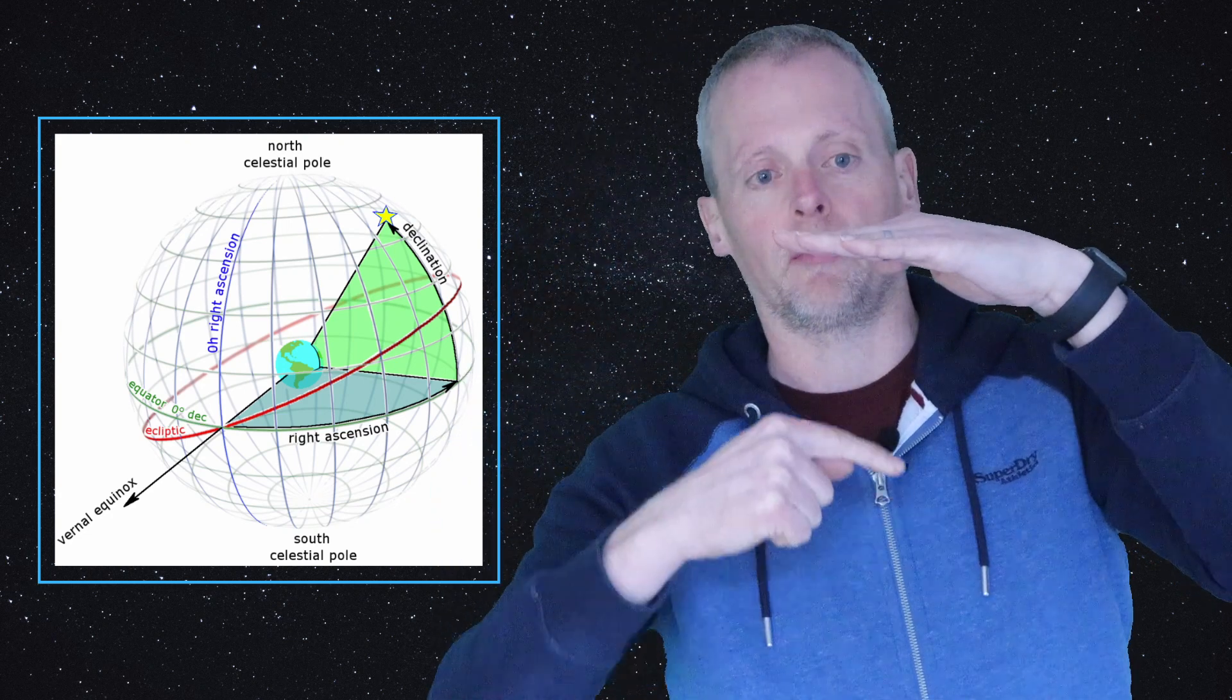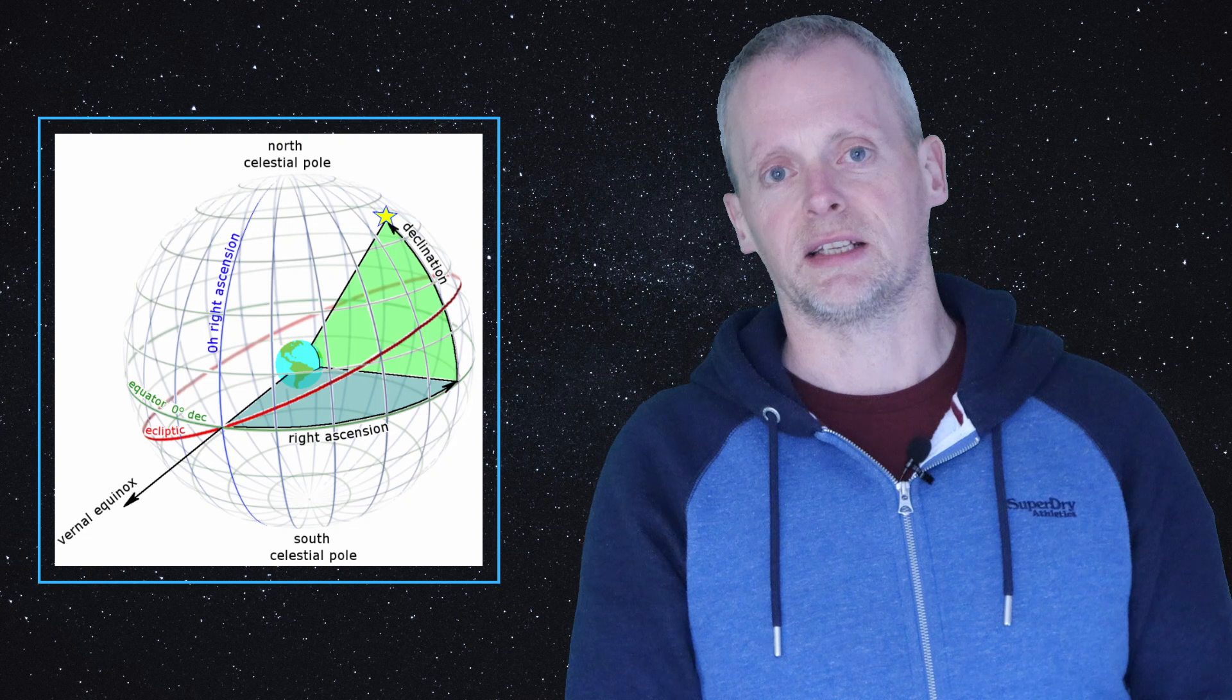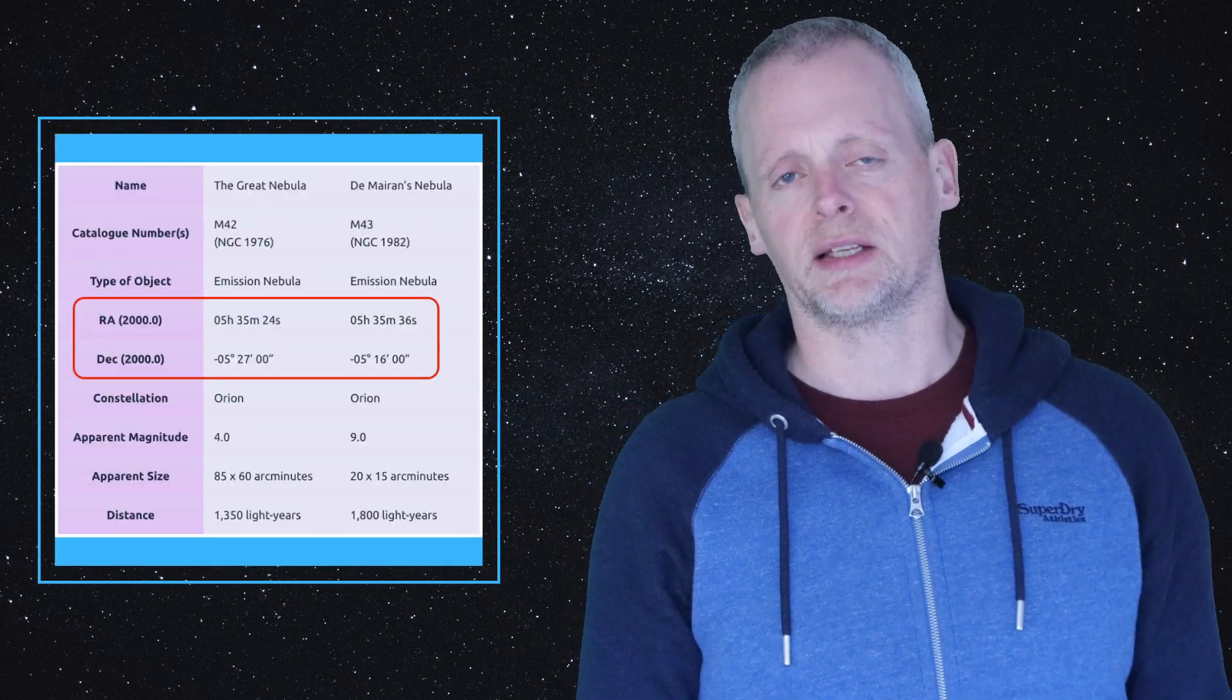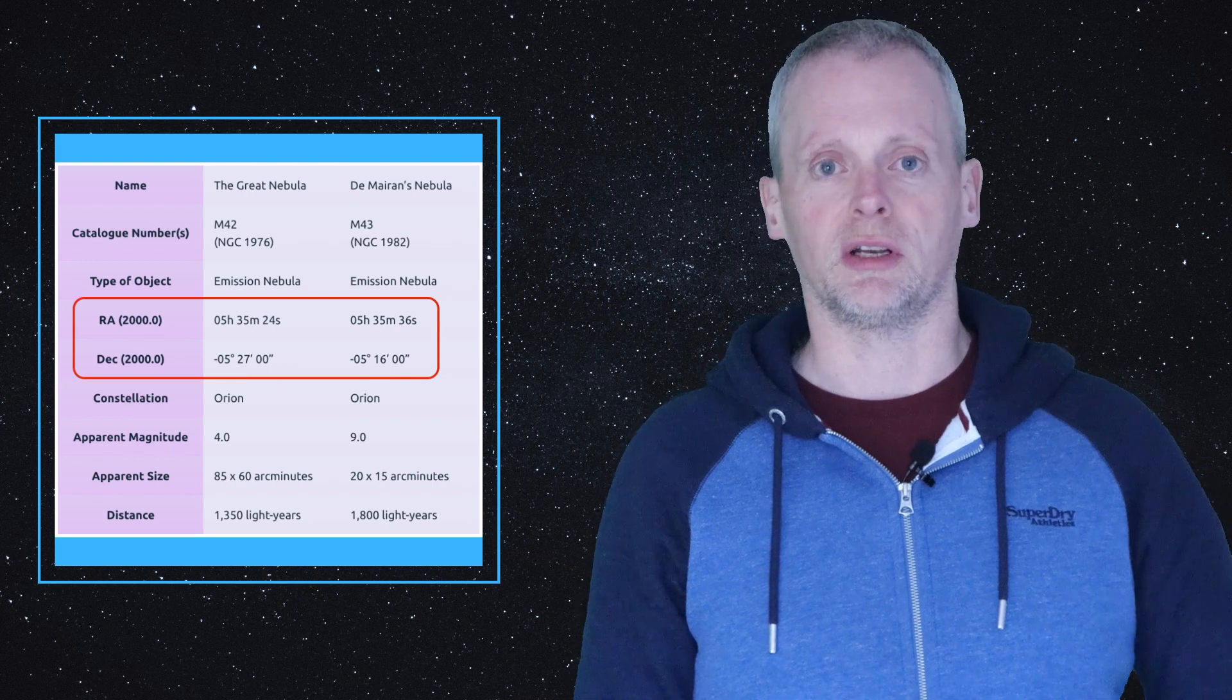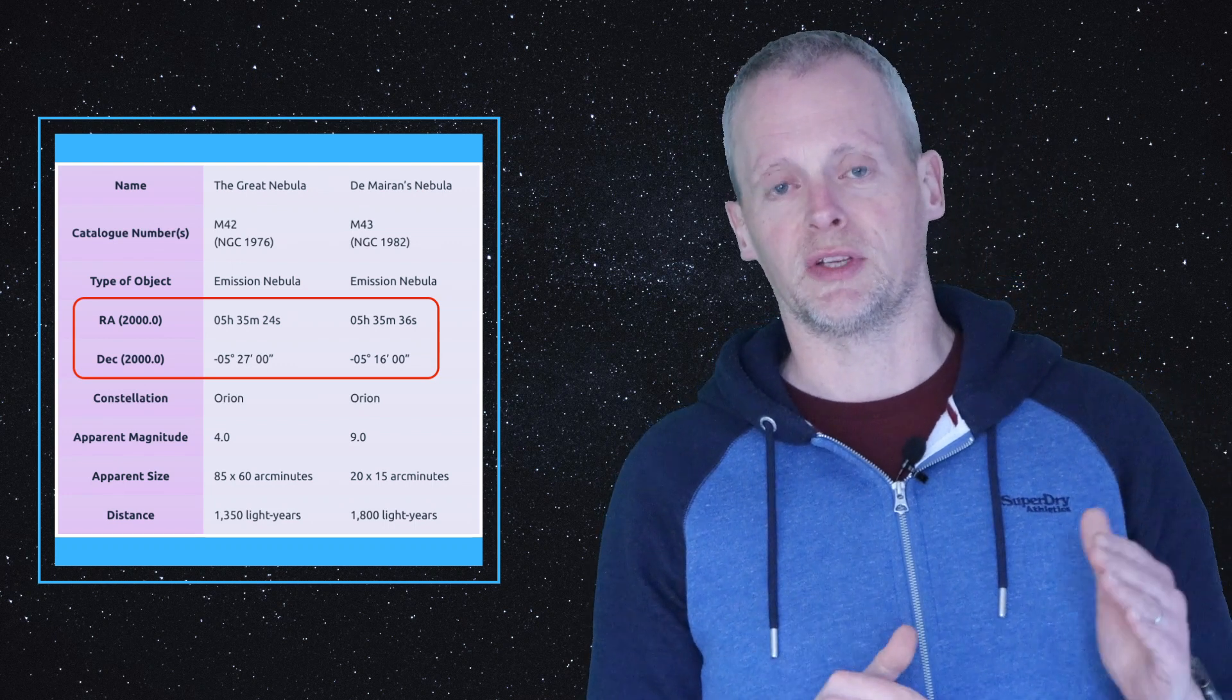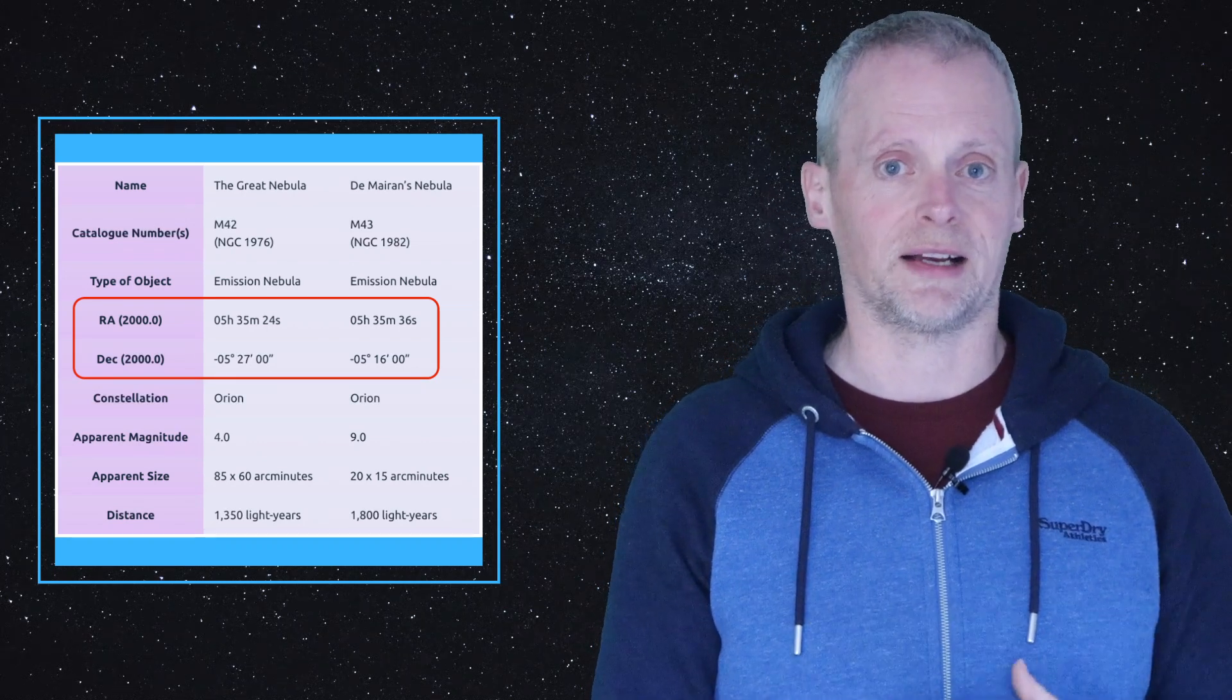How do we use these coordinates then to help us with our astronomy? Well, first and foremost, every object out in space has a celestial coordinate. I can tell you with precision, like we looked at earlier with the Orion Nebula, exactly where to find it using right ascension and declination, and you can convey that information to somebody else. I've seen an object at right ascension X, declination Y.